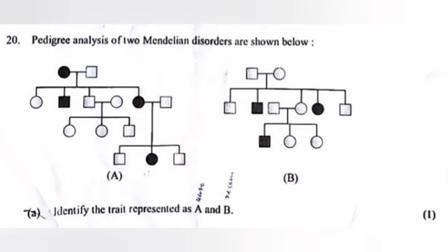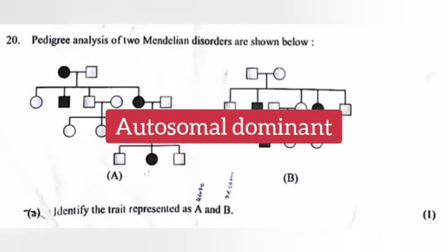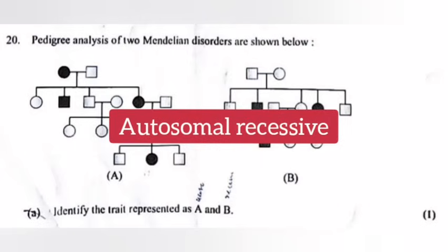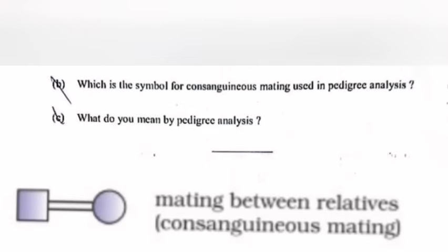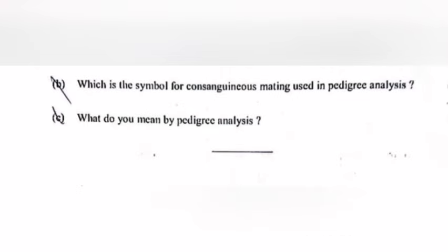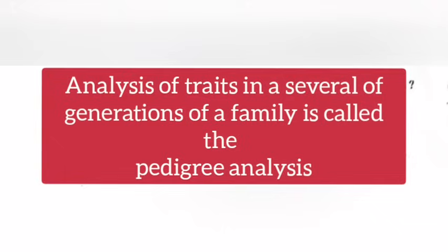Question 20: Pedigree analysis of two mental illness disorders are shown below. Identify the traits represented as A and B. Answer: A — Autosomal dominant, B — Autosomal recessive. Which is the symbol for consanguineous mating used in pedigree analysis? Answer: Mating between relatives — consanguineous mating. What do you mean by pedigree analysis? Answer: Analysis of traits in several generations of a family is called pedigree analysis.